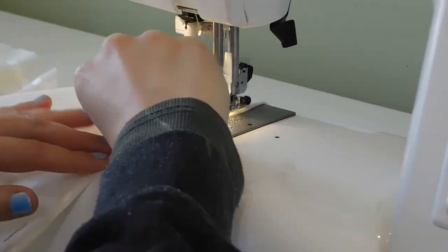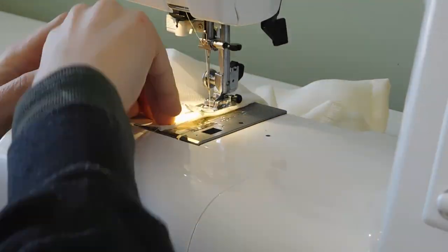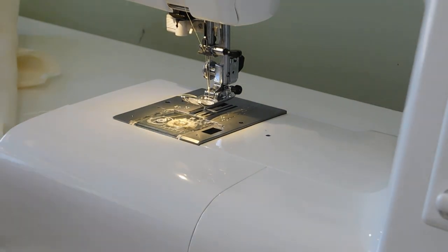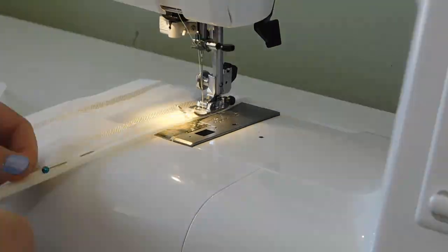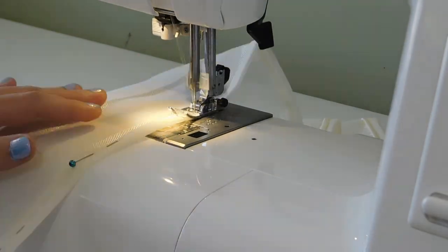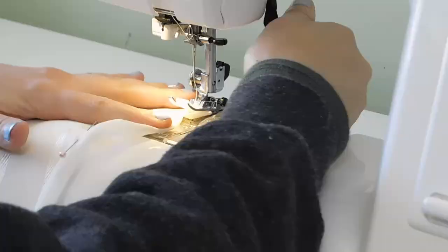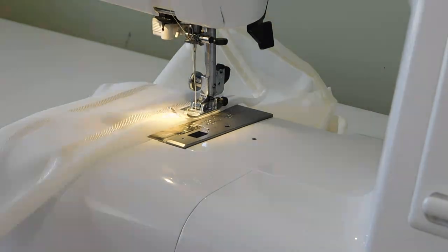Once my panels were sewn together I leave the back panel unsewn for now and start sewing the hem of my ruffles. To do this I fold the fabric up 3/8 of an inch and then again 3/8 of an inch to create a rolled hem and then with a straight stitch set at 2.5 millimeter length I sew up all of the hems.